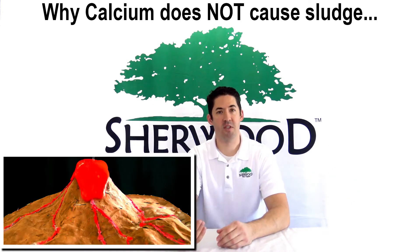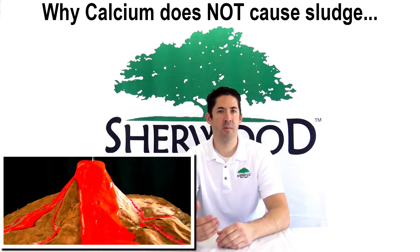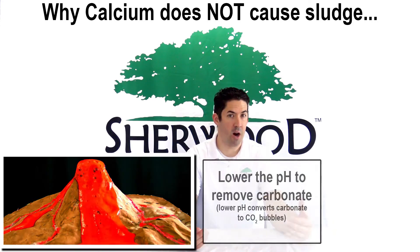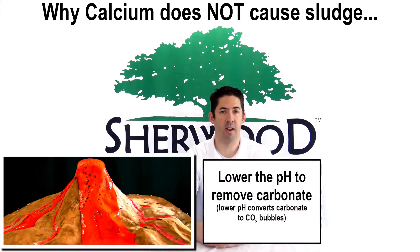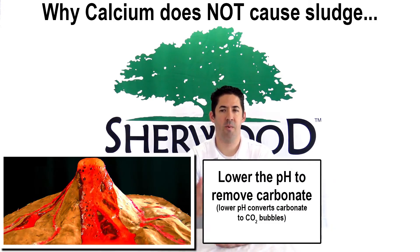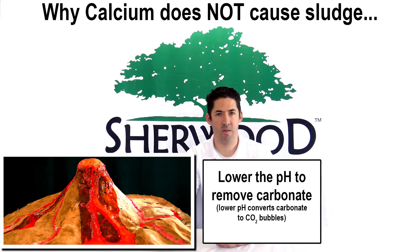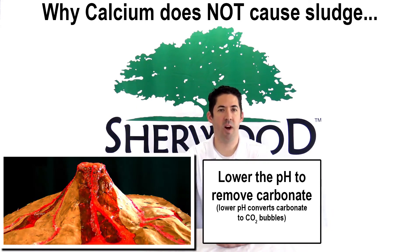You can accomplish the same thing by adding calcium carbonate instead of sodium carbonate, which is baking soda. When you lower the pH, the carbonate will react and convert over to carbon dioxide and bubble out in the same way.